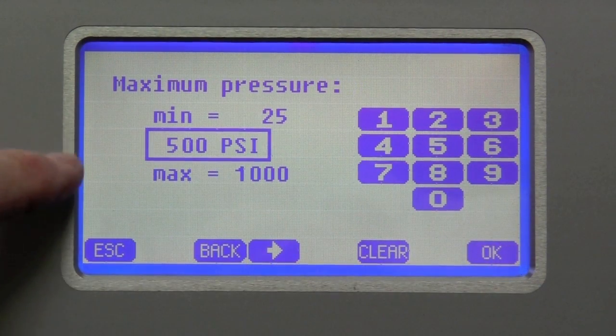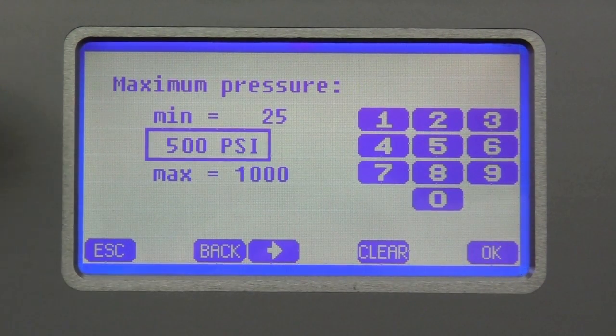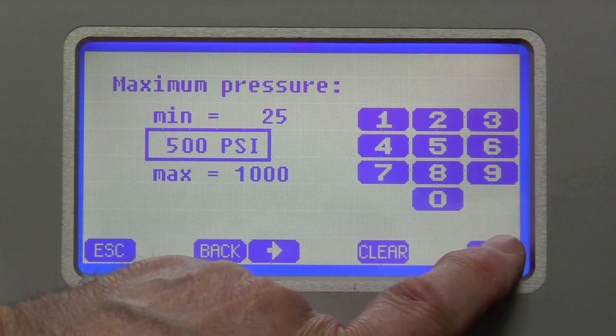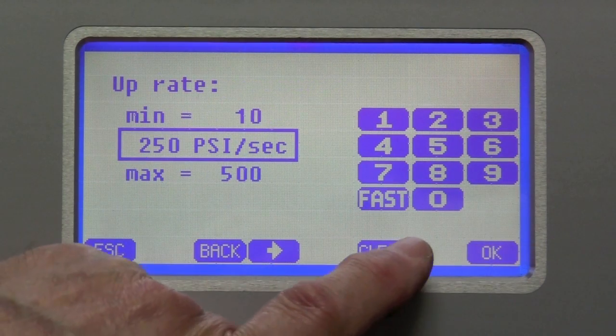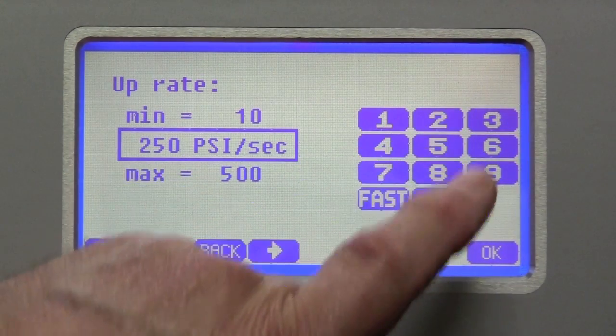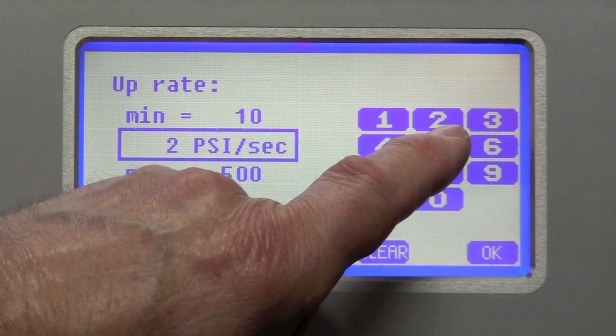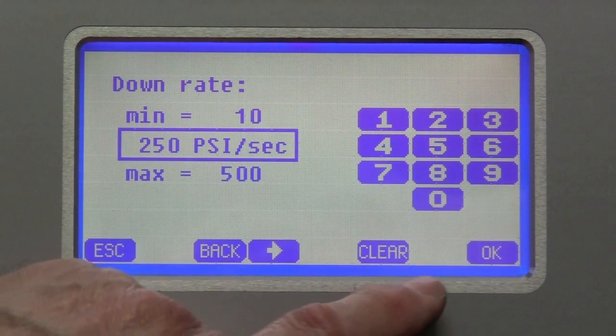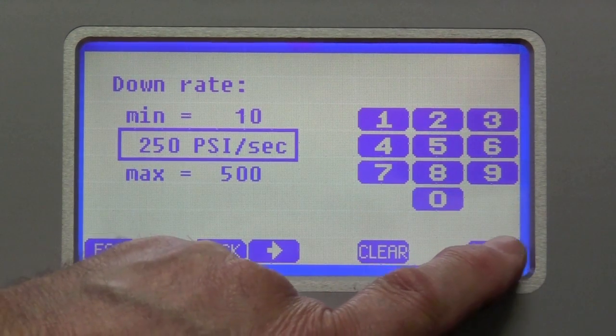And the maximum pressure, in this case, defaults to 500. We'll simply leave it there because I know it's going to leak before then. And the up rate, I'm going to make that 25. And the down rate will leave at 250.